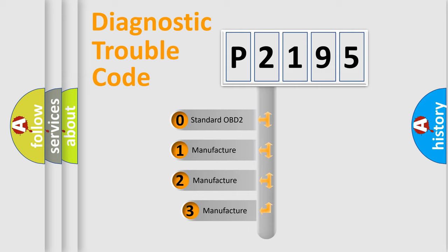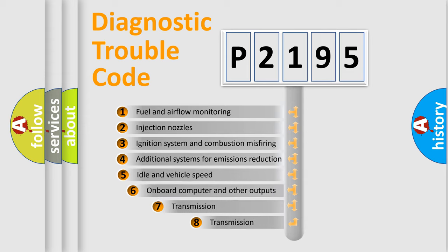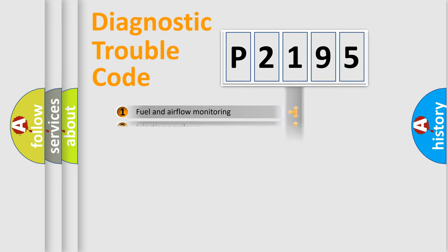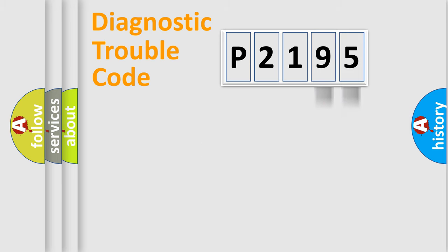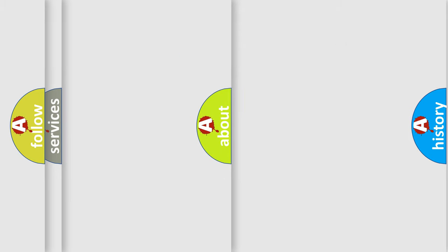If the second character is expressed as zero, it is a standardized error. In the case of numbers 1, 2, or 3, it is a more specific expression of a car-specific error. The third character specifies a subset of errors. This distribution is valid only for the standardized DTC code, and only if the second character is expressed by the number zero. Only the last two characters define the specific fault of the group.